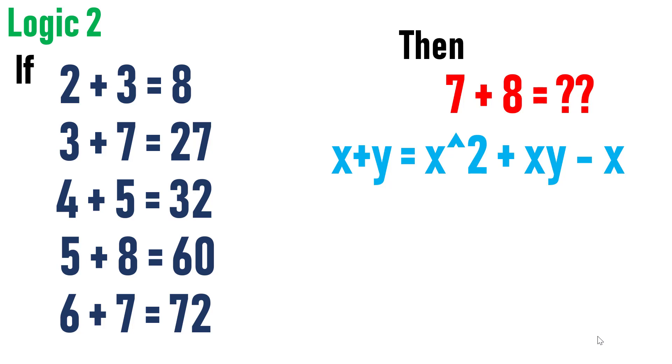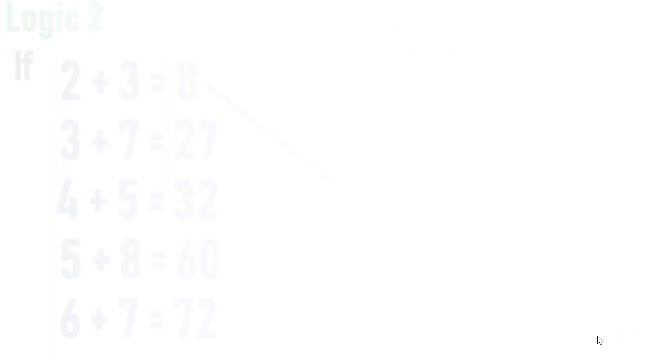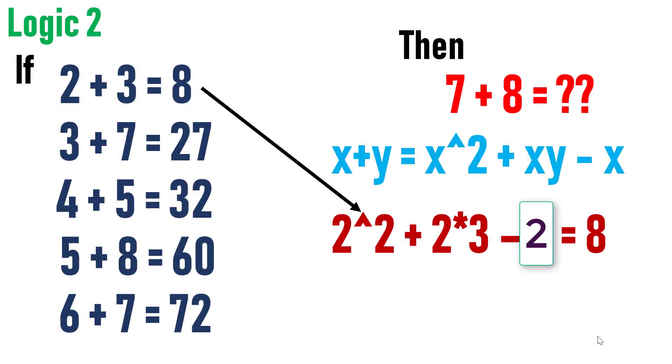Let's validate now. Now, consider our first equation. Here, the square of first number is 4 plus product of two numbers is 6, that is 2 into 3 is 6 minus first number, which is 2 will yield the result 8.